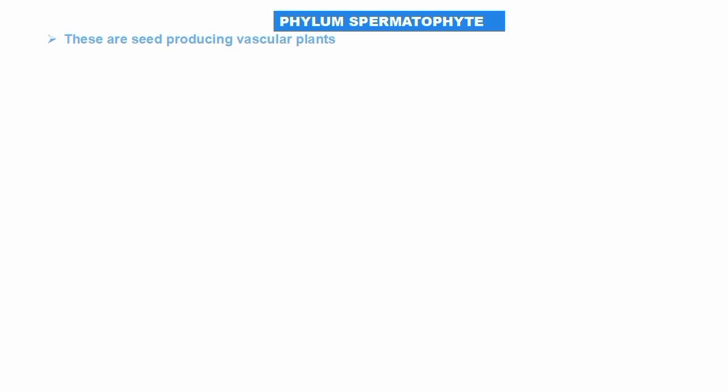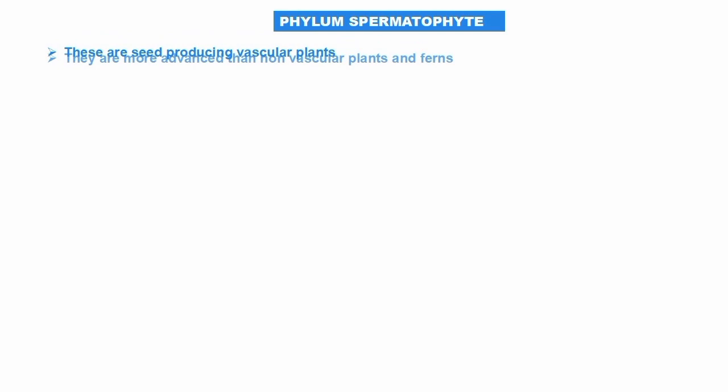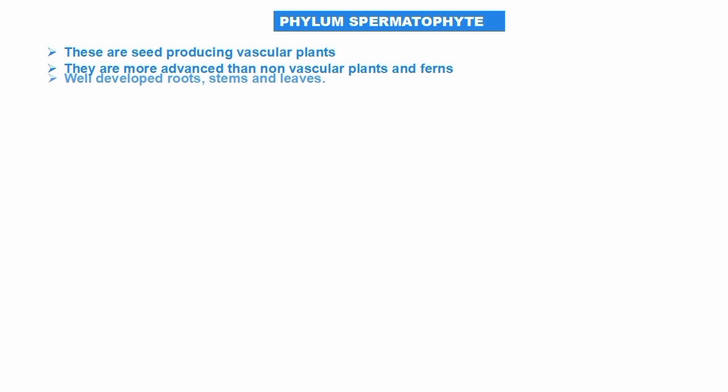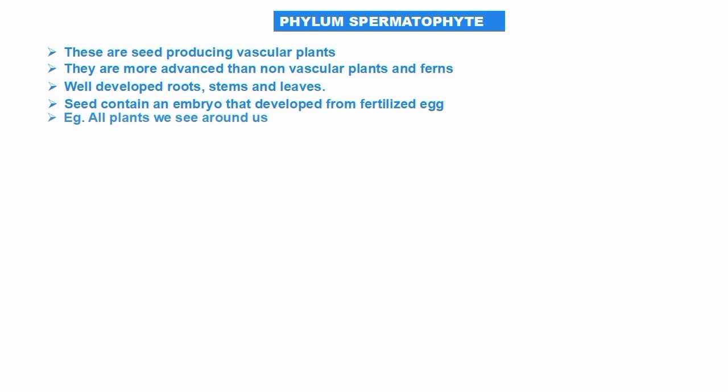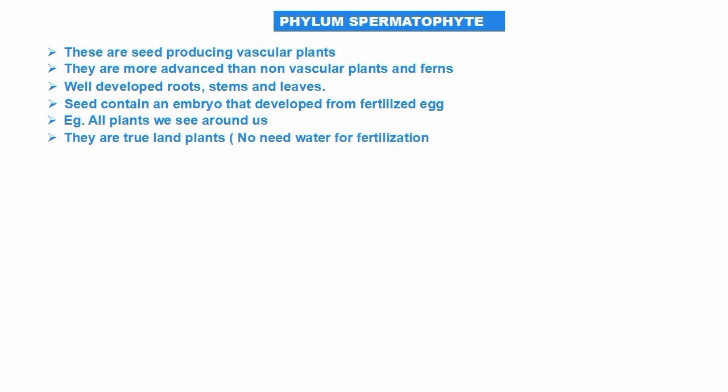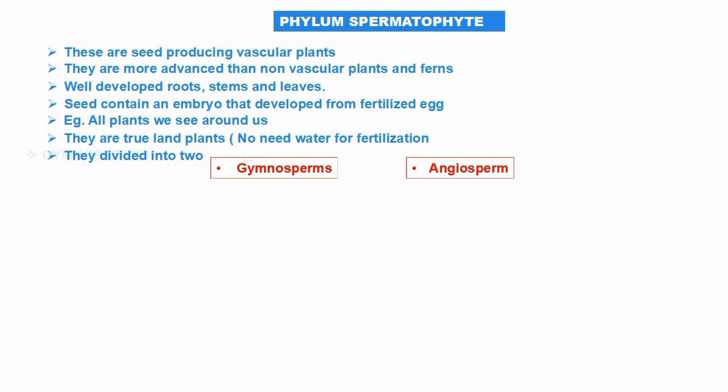Now we will talk about Spermatophyta — flowering and seed-producing plants. They are the seed-producing vascular plants, more advanced than non-vascular plants and ferns. They have well-developed roots, stems, and leaves. Seeds contain an embryo developed from a fertilized egg. Examples include almost all the plants we see around us. They are divided into two groups: gymnosperms and angiosperms.